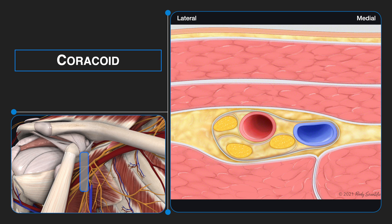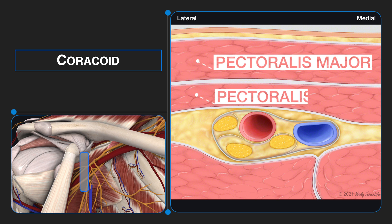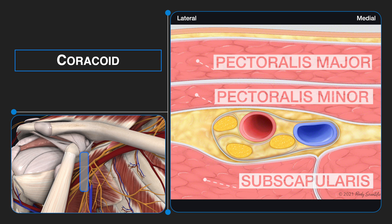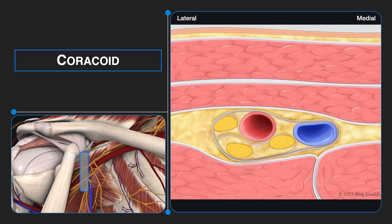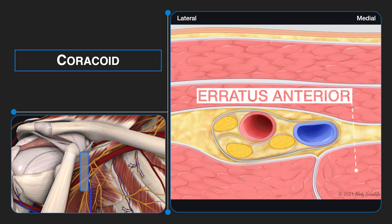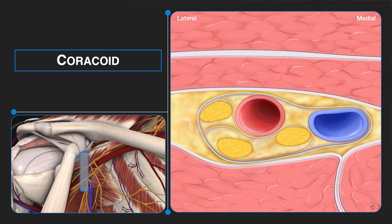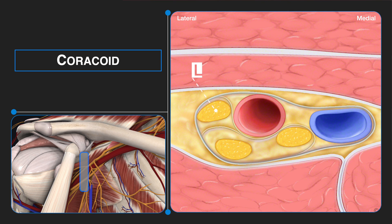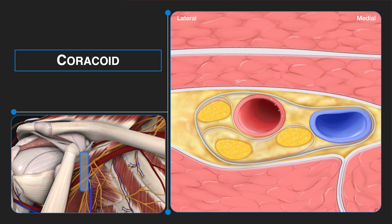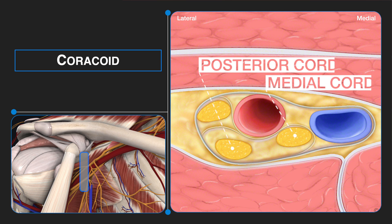Relevant musculature includes the pectoralis major, pectoralis minor, subscapularis, and serratus anterior. As demonstrated in this image, the lateral cord may again be in a distinct fascial compartment that is separate from the fascial compartment that contains the medial and posterior cords.